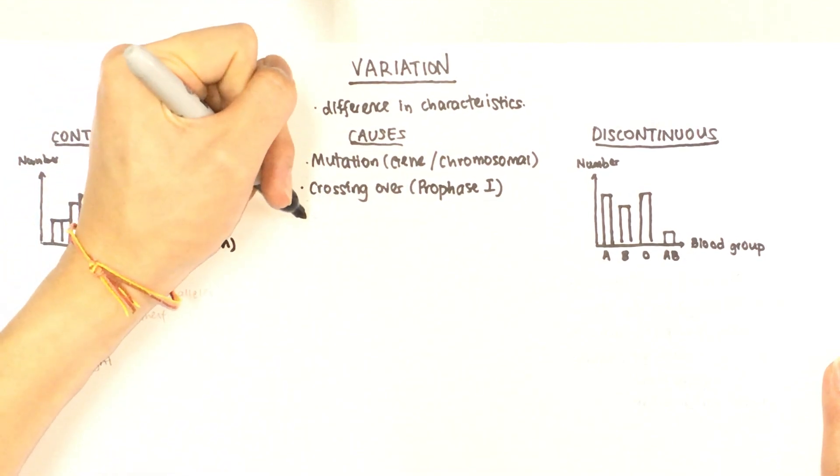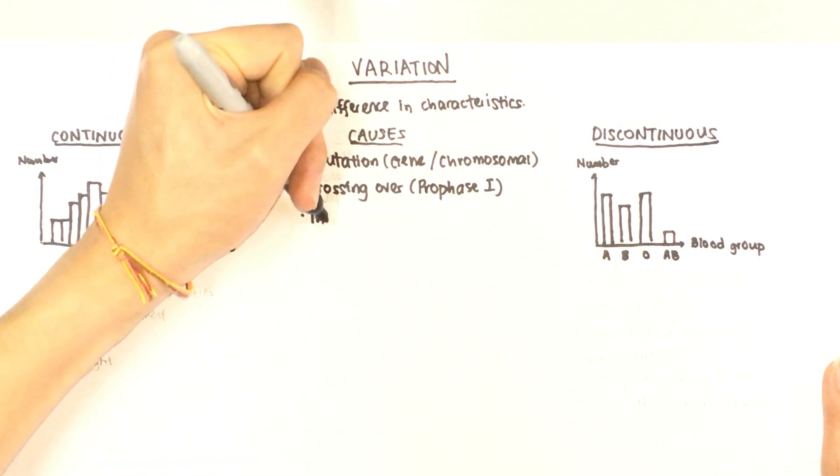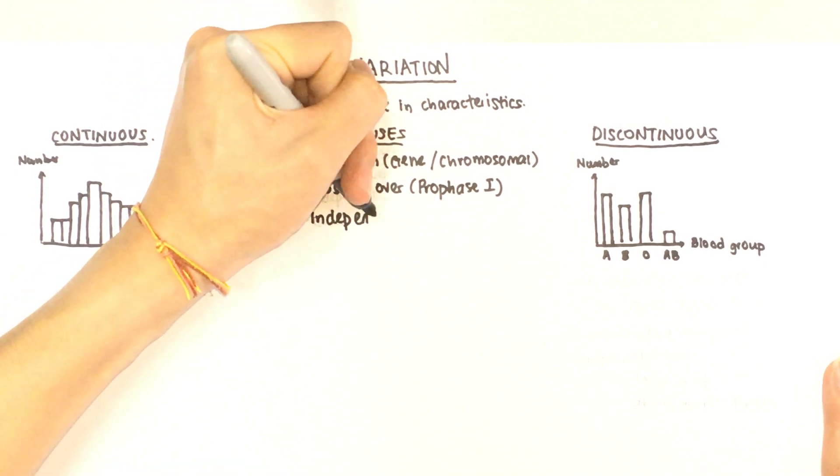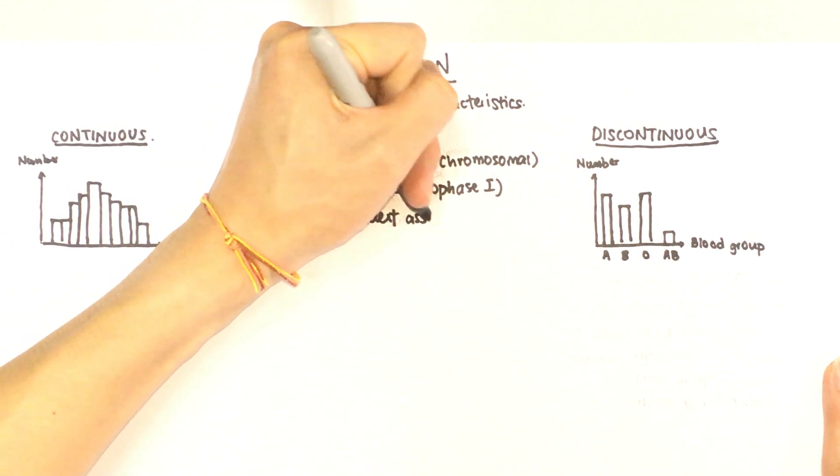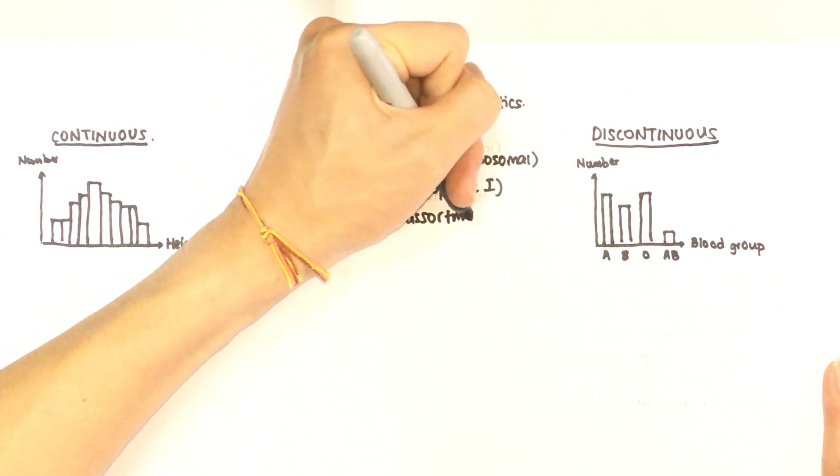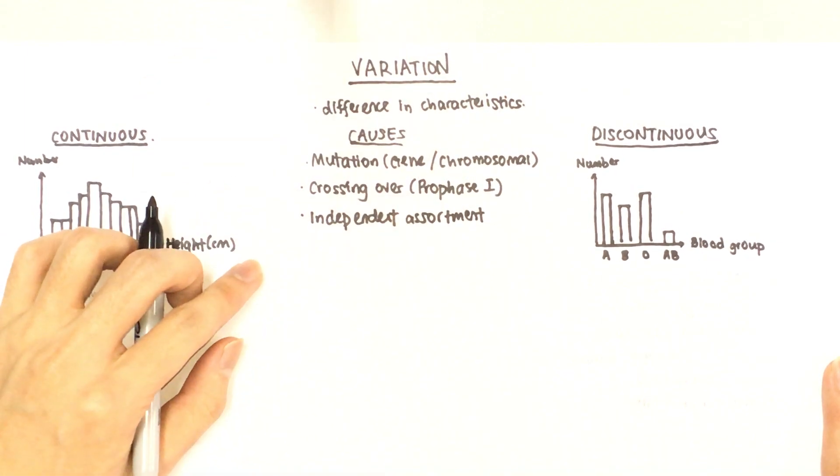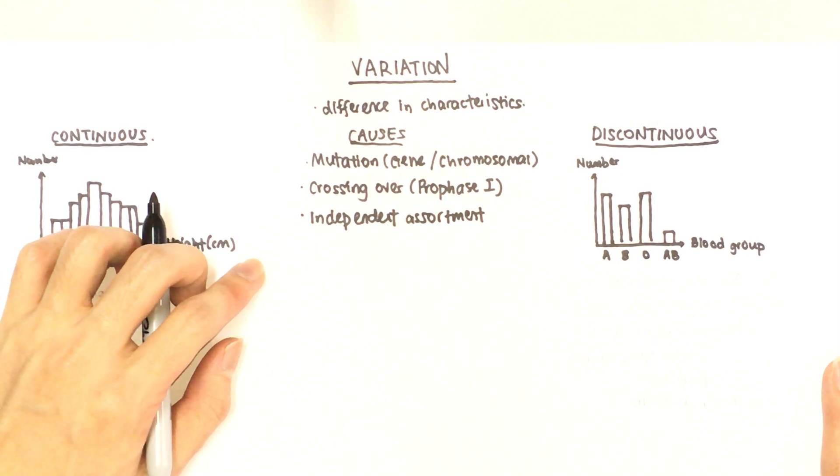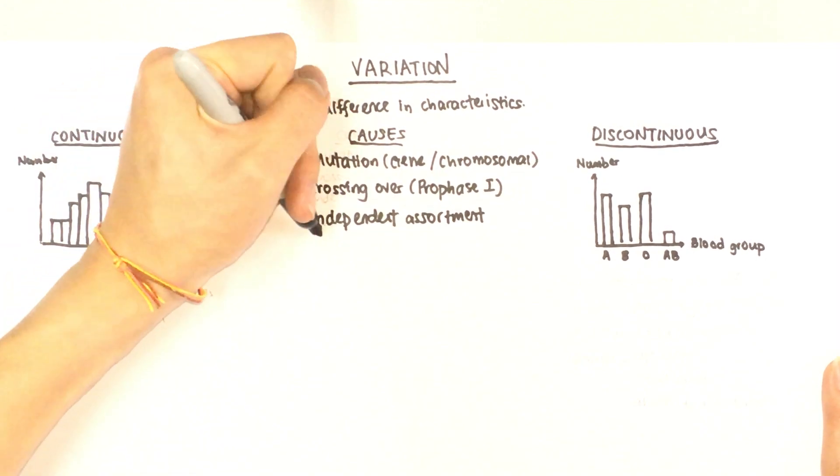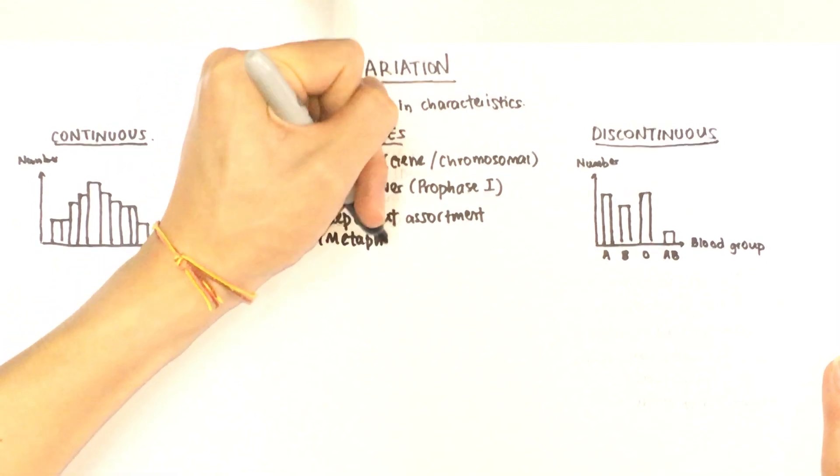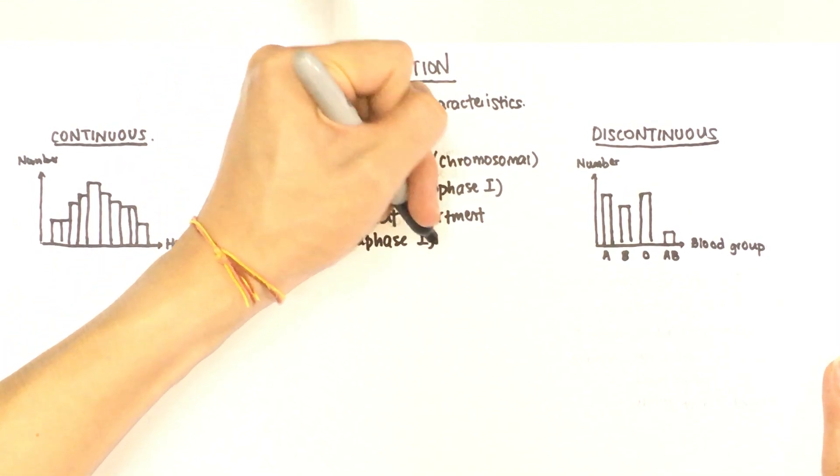The next cause of variation is independent assortment. Now independent assortment is the different arrangement that each chromosome can have during metaphase 1 of meiosis 1 as well.